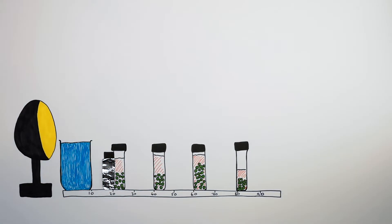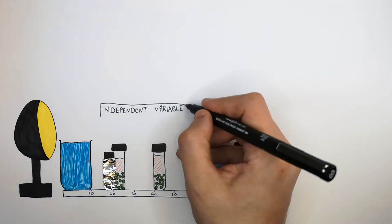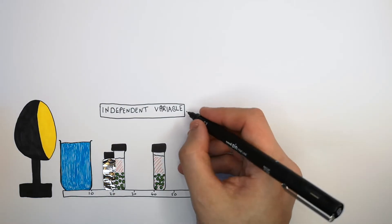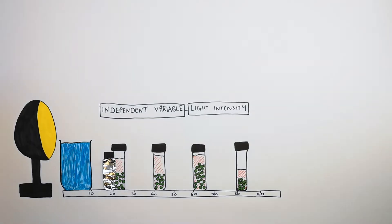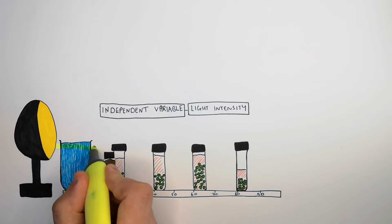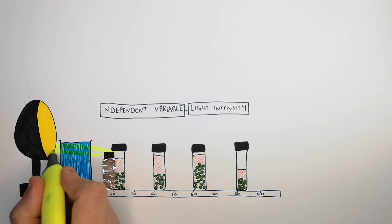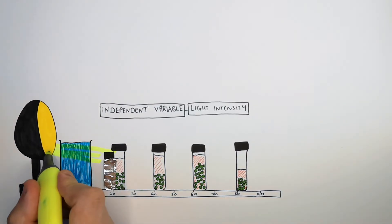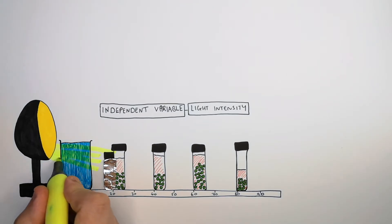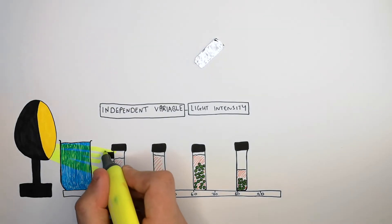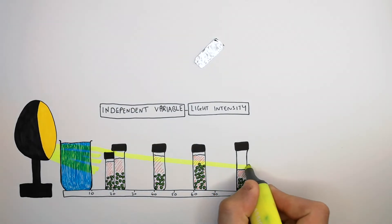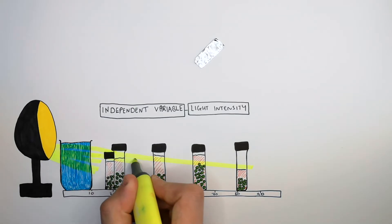Let's now go through what the variables are in this investigation. The independent variable is what we change. In this case, what we change is the light intensity. Our light source, the lamp, emits light, so light intensity is going to be highest in the flasks closest to the lamp. The further away you go from the light source, the lower the light intensity — it decreases with distance.